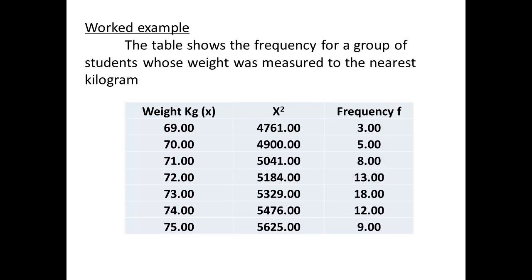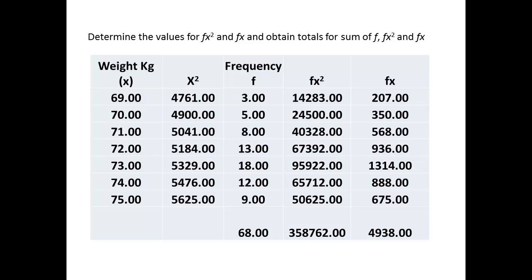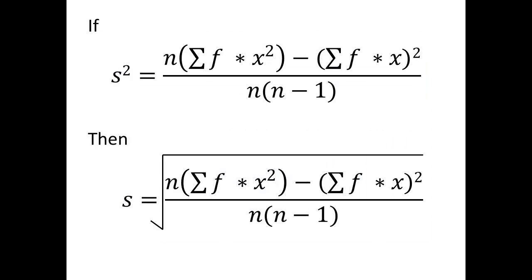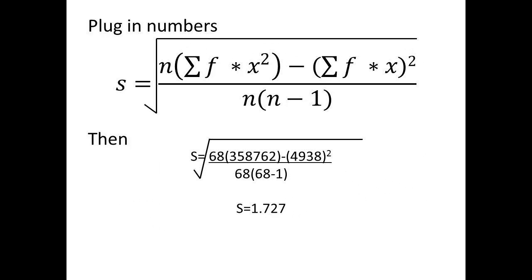The table here shows the weight of a sample of students grouped to the nearest kilogram. For convenience, we have also included a column for X squared. The values for fX² and for fX need to be calculated, and these are shown in the last two columns. The totals for f, fX², and fX are also shown. To determine the value for S, we have to plug in the numbers from the table. We have S equal to the square root of 68 multiplied by 358762 minus 4938 squared, divided by 68 multiplied by 67. This gives us an answer of S equal to 1.727.